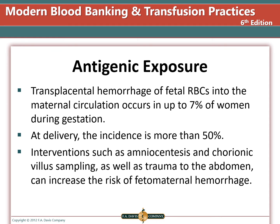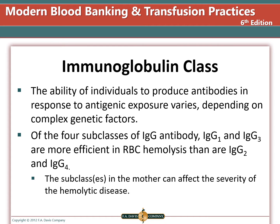Transplacental hemorrhage of fetal cells into maternal circulation occurs in up to 7% of women during gestation, and in 50% of women at delivery. Interventions such as amniocentesis and chorionic villus sampling, as well as trauma to the abdomen, may increase the risk of fetal-maternal hemorrhage. Host factors affecting antibody production vary depending on complex genetic factors. Of the four IgG subclasses, IgG1 and IgG3 are more efficient in red cell hemolysis than IgG2 and IgG4, which affects severity of the disease.